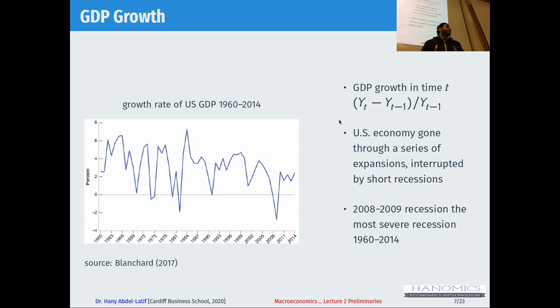That's the first concept — GDP. How to calculate GDP: three methods. You add up the value of all final goods in a given year, or you add up the value added (value of production minus value of intermediate goods), or the third method is adding up all incomes. All three should give you the same number. Then we learned the difference between nominal and real GDP and how we calculate GDP growth.